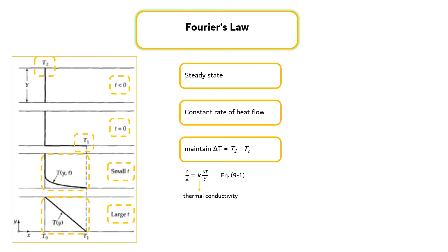As the slab thickness approaches 0, the local rate of heat flow per unit area in the positive Y direction is designated by QY, which can be expressed by equation 9.2. This equation, which serves to define K, is the one-dimensional form of Fourier's law of heat conduction.